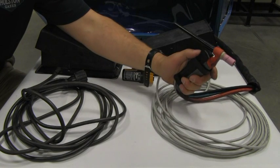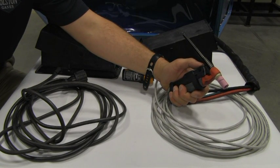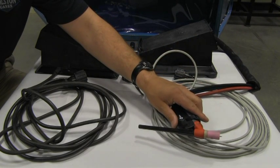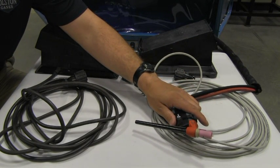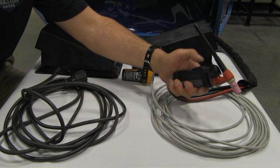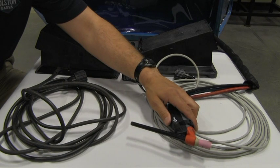Next is a hand control. This operates the same way as the foot control, except that all the controls are right here on this thumb wheel. And there's also push button controls, where an operator would just push a button, and the arc would come on, and then he would let go, and the arc would go out. Just a simple on-off switch.